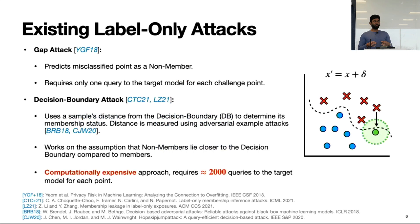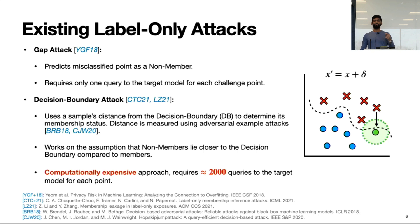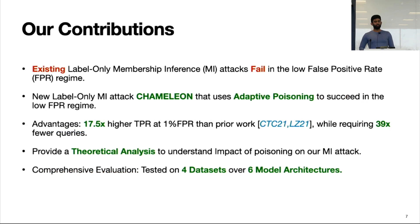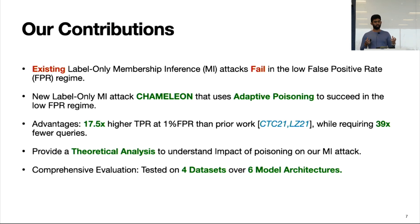Attack success is measured by how high a true positive rate the adversary can achieve at a fixed low false positive rate. A true positive is where the adversary correctly identifies that point (x, y) was in the training set. Previous work like the decision boundary attack determines membership by estimating a point's distance from the decision boundary, but this is computationally expensive and requires close to 2,000 queries. Existing label-only membership attacks tend to fail in the low false positive regime.